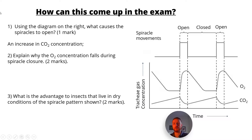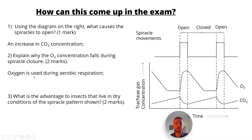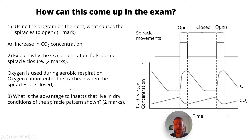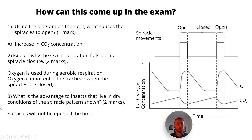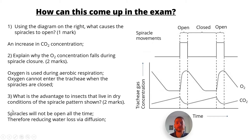Answer for question one: what causes the spiracles to open? It's an increase in CO2. When the spiracles are closed, CO2 steadily rises and then reaches a certain threshold when the spiracles open. Question two: explain why the oxygen concentration falls during spiracle closure? First mark — oxygen is used during aerobic respiration. Second mark — oxygen cannot enter the trachea when the spiracles are closed. Question three: what is the advantage to insects in dry conditions? First mark — the spiracles will not be open all the time. Second mark — therefore reducing water loss via diffusion.